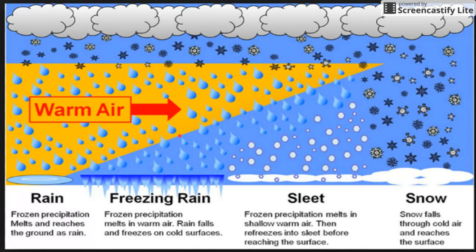...but on the surface, surface temperatures are cold, then it doesn't have time to refreeze the precipitation, so it just freezes on contact, because it's so supercooled. It's pretty much super-chilled water that's falling through, because it started off as snow.